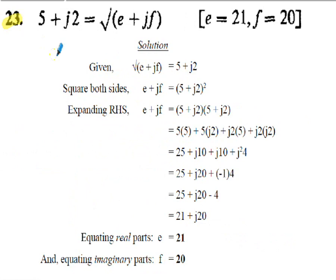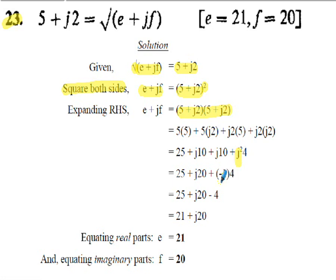Solution to question 23: given the square root of (e plus jf) equals 5 plus j2, square both sides to remove the square root, giving e plus jf equals (5 plus j2) squared. Expand the binomial bracket, replacing j squared with negative 1. Equating real parts: e equals 21. Equating imaginary parts: f equals 20.